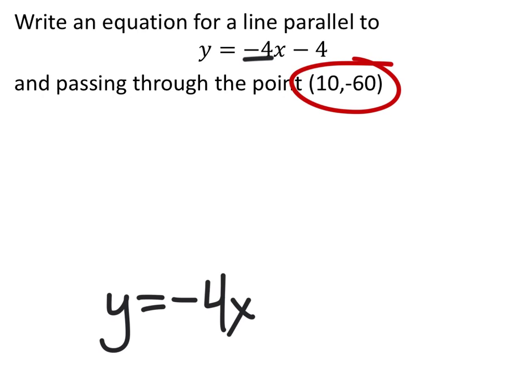If you want to find an example of a problem that uses point-slope form, look at some of the previous examples — it's on this playlist as well. But in this case, just to change it up a little bit, we're going to use slope-intercept form, which is y equals mx plus b.